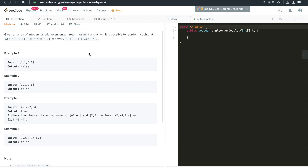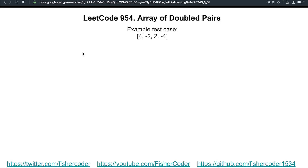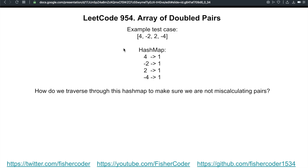After understanding this problem, how can we tackle it? Let's take a look at our slides. The example test case is the given correct case: four, minus two, two, and four. The first step is to build a hashmap where the key is the value in the given array and the value is the frequency of how many times that number appears. A tricky question is: in what order do we traverse this hashmap? If we traverse in the original order and start with four, four's double is eight — but do we have an eight in this array?